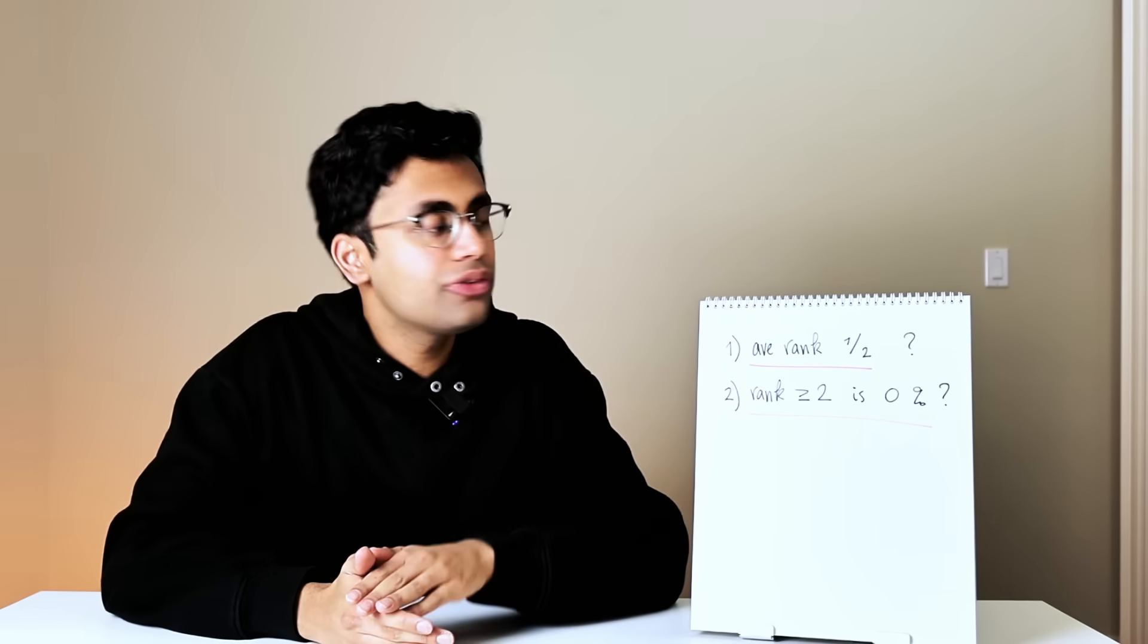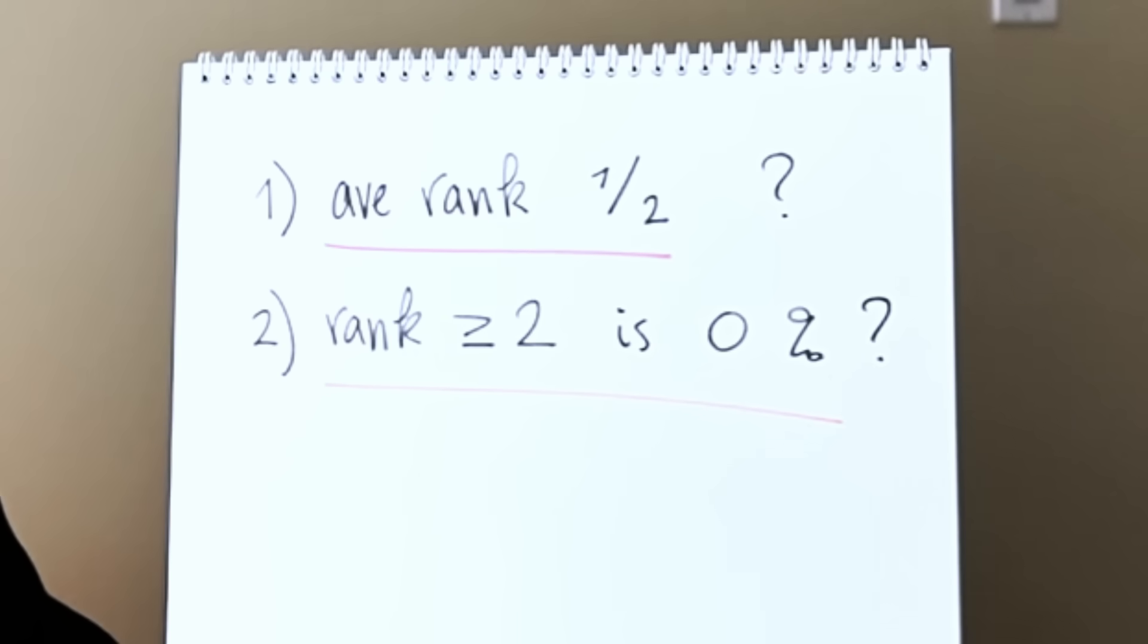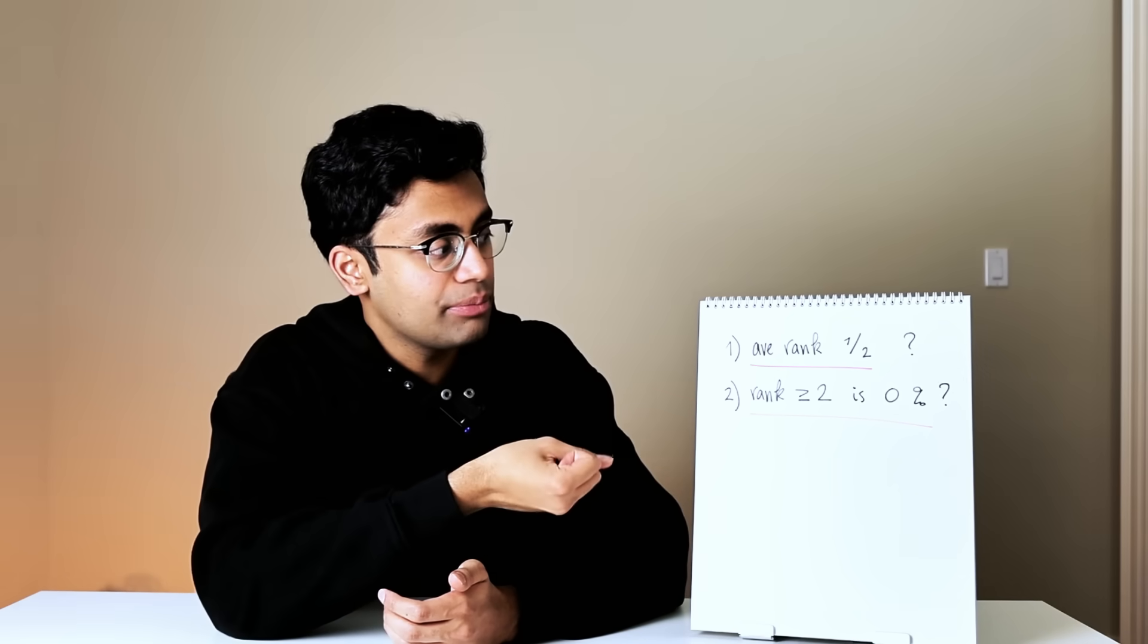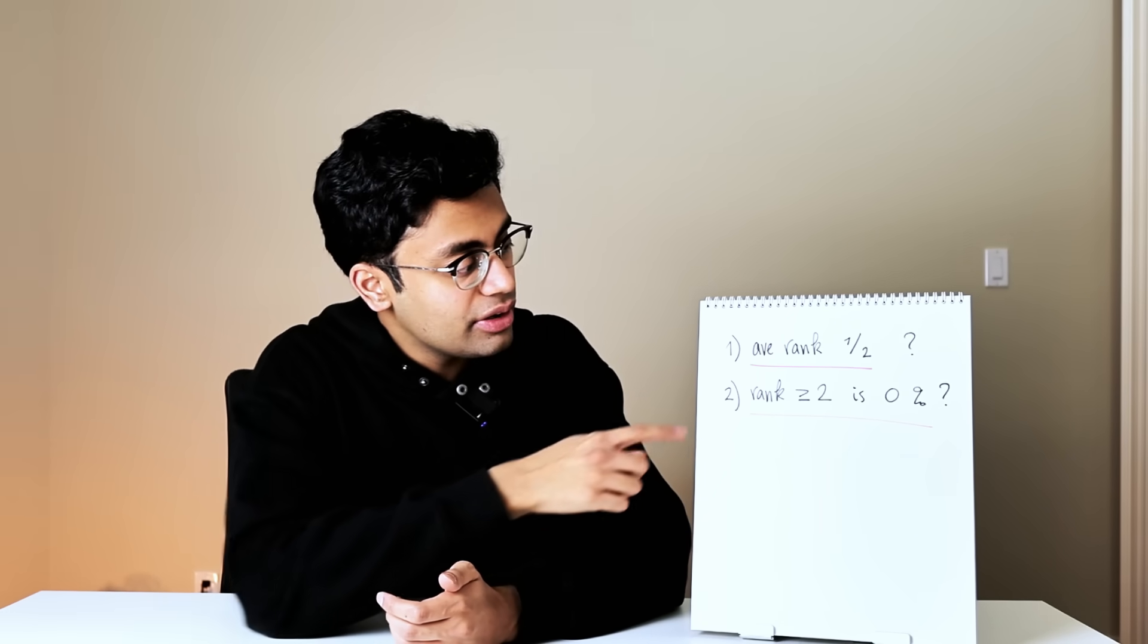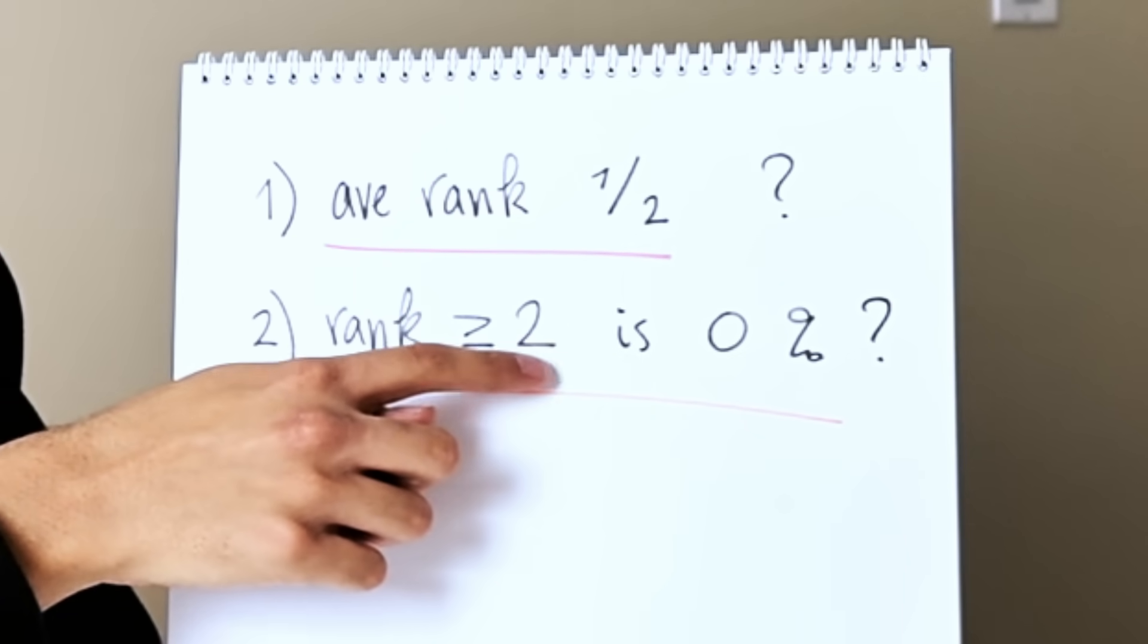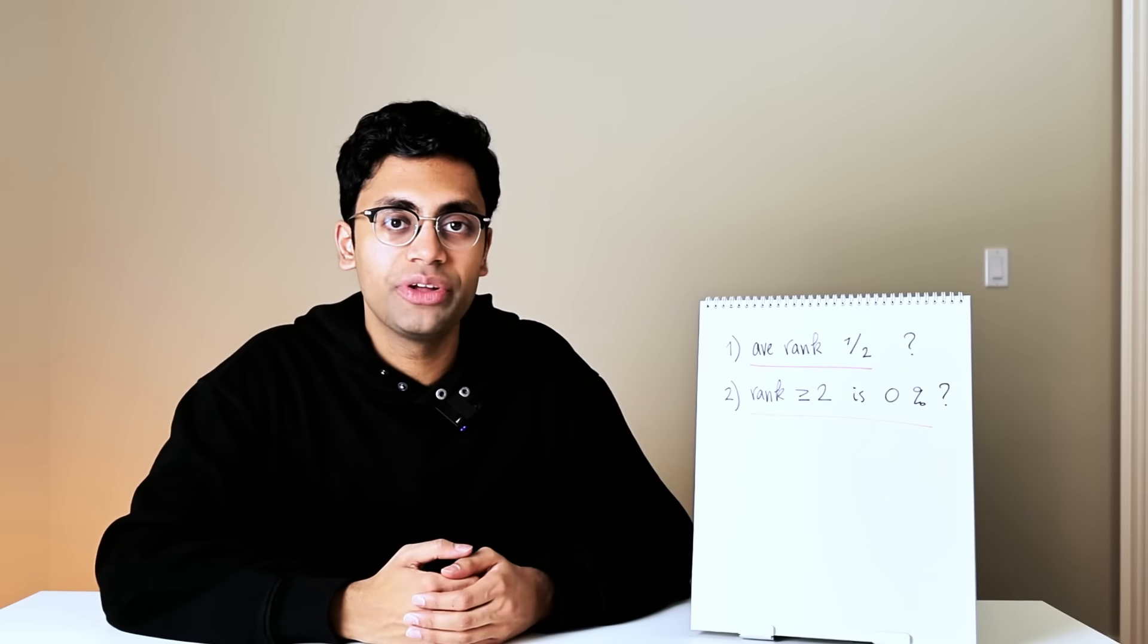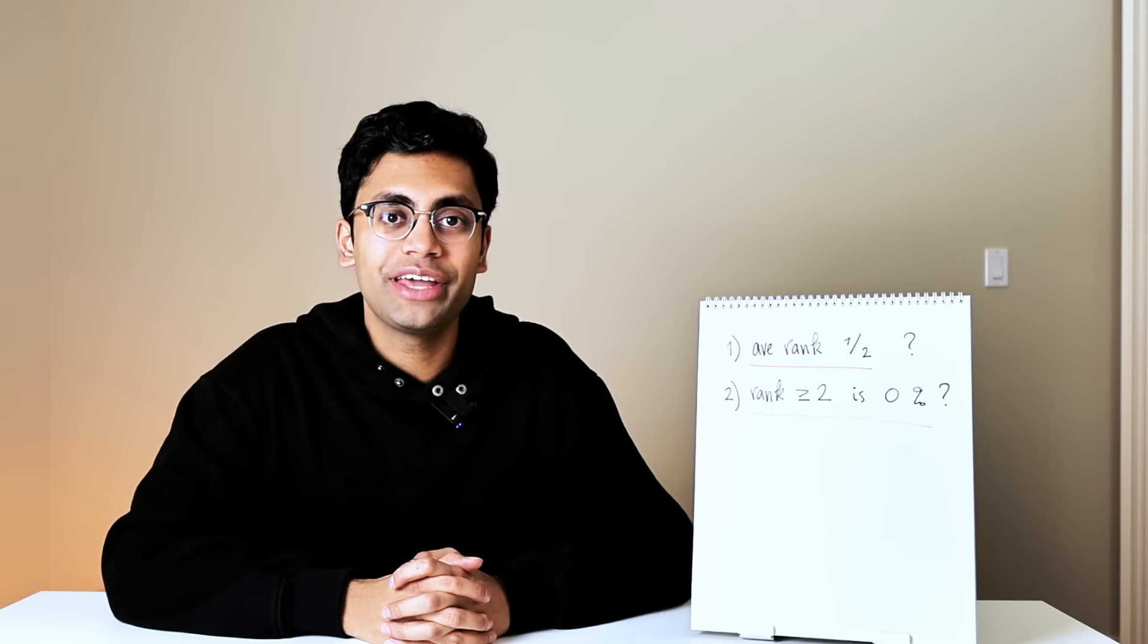Despite these amazing results, there are a number of questions we still don't know the answer to. First, is the average rank actually equal to one half? We have a really good upper bound, but we need an equality. Can we actually show it's equal to one half? That's open. And second, can we show that the proportion of curves with rank bigger than or equal to two is actually zero percent? A solution to any one of these questions would probably win you a Fields Medal. That's all for this video, thanks for watching, I'll see you next video.